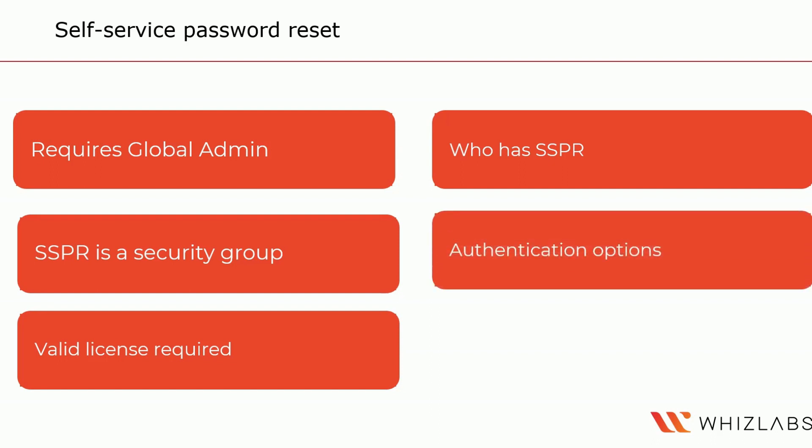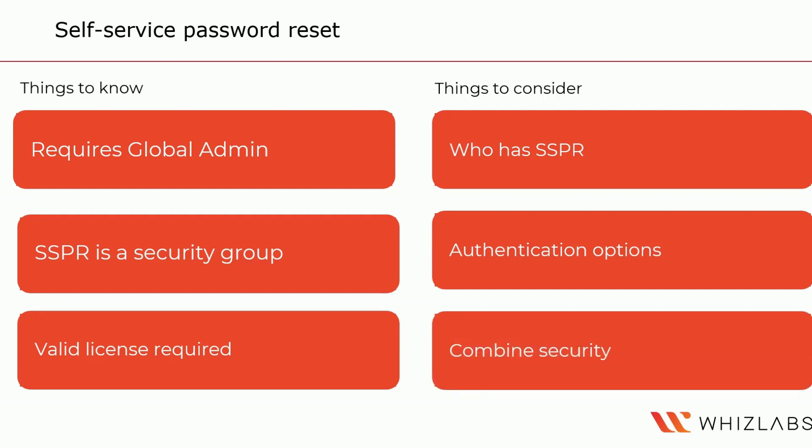Next, you want to consider your authentication methods. Determine how many different authentication methods are required to reset a password — the system must require at least one. This could be a strong password, an email notification, a text message, or a security code. You can combine these different methods for additional security, such as requiring users to answer security questions or combine passwords and security questions together.